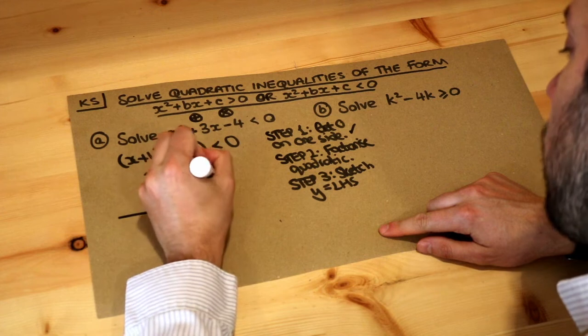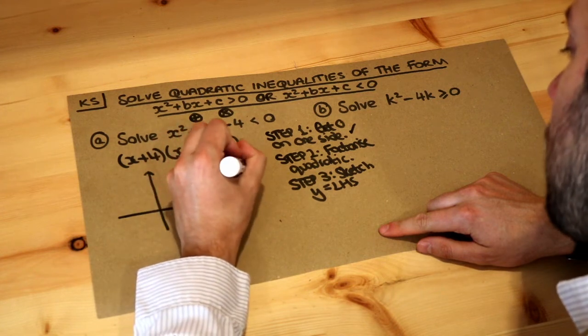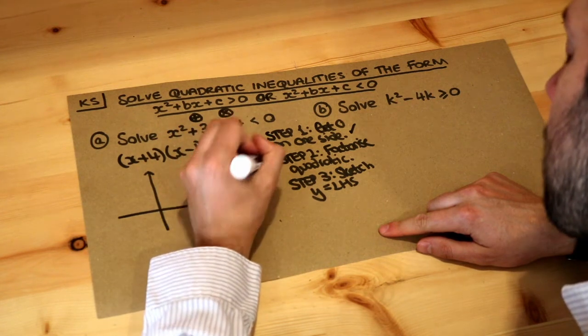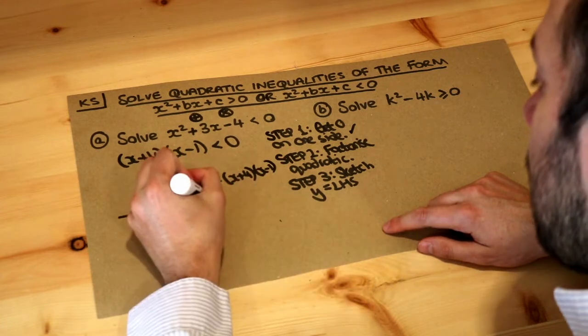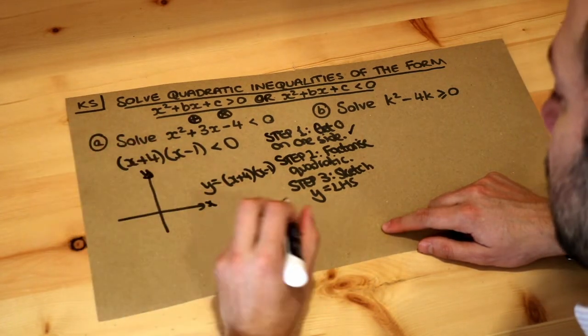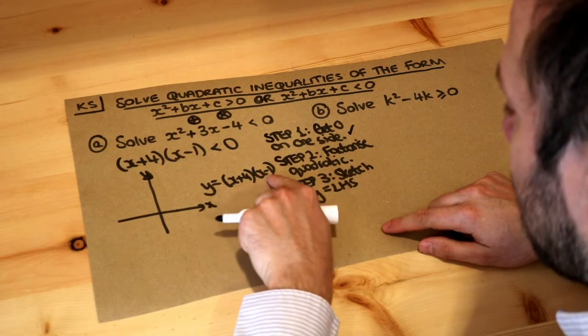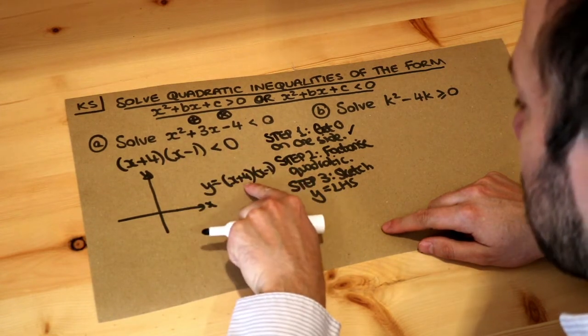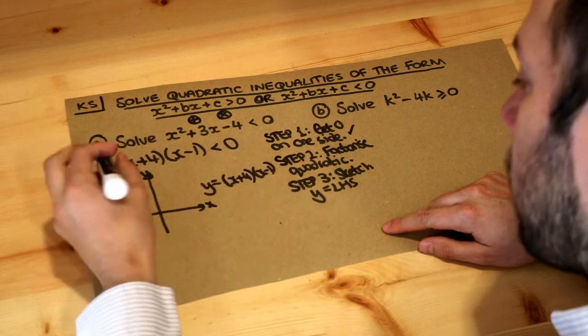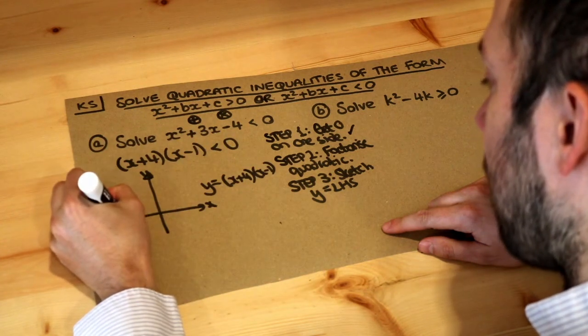We want to sketch y equals x plus four times x minus one. Now for the sake of time I'm just going to recap what we did in that video but basically if you made each of these equal to zero, if x plus four is zero then x would be minus four so it cuts the x axis at minus four.